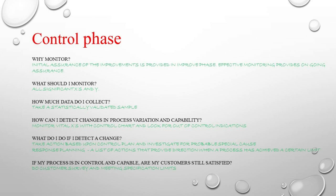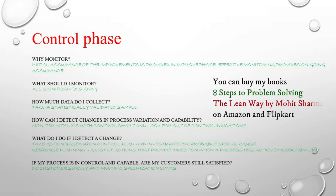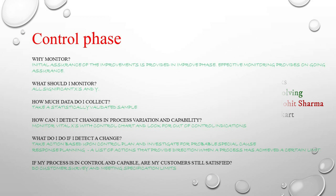What do we need to do if we detect something changing? We have already created a control plan, so we take actions based on that and investigate for probable special causes. There is also a response plan — if anything goes out of control, look at the response plan and take actions. If the process is in control and capable, check whether customers are still satisfied by doing a customer survey. If you understood the customer's problem statement at the beginning and resolved it, the customer will definitely be happy by the end of the control phase.